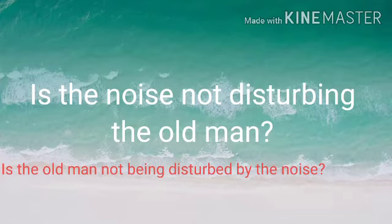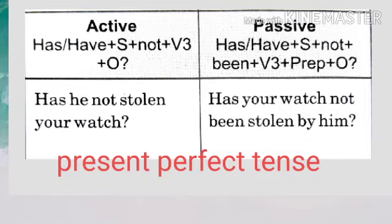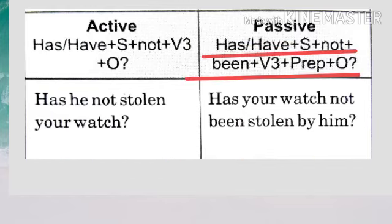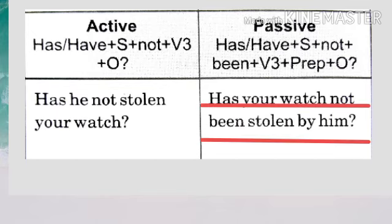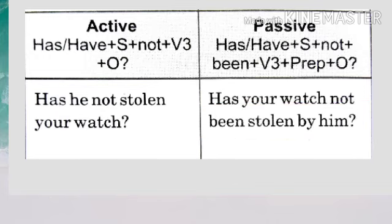Now, present perfect tense, negative interrogative. 'Has he not stolen your watch?' Apply the rule: has/have + subject + not been + third form of verb + preposition + object. So the answer will be: 'Has your watch not been stolen by him?' Here 'has' is your verb, 'your watch' is the subject, followed by 'not been stolen by him.'